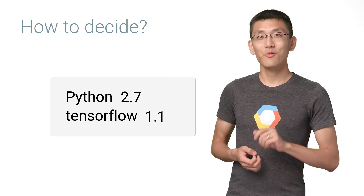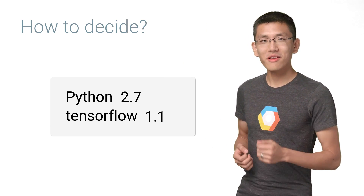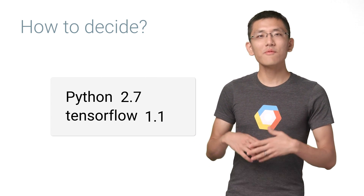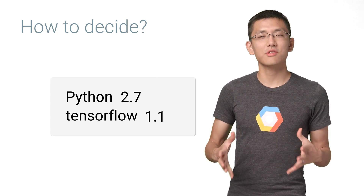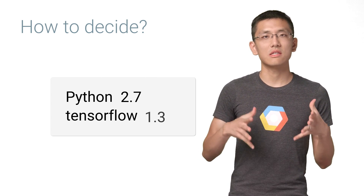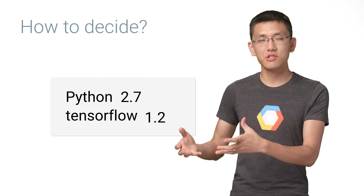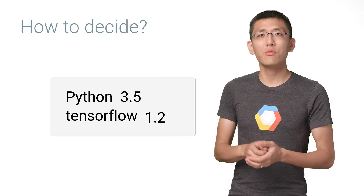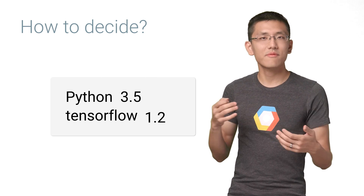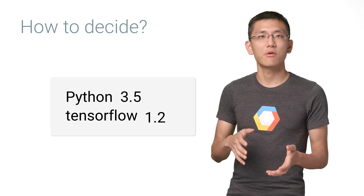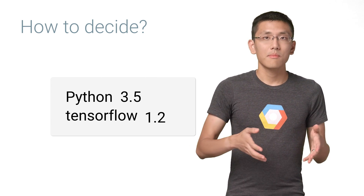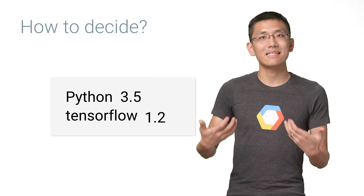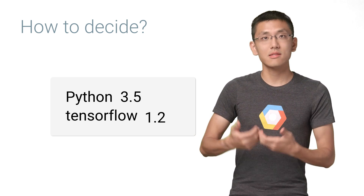So, which one do I use — Virtualenv or Anaconda? I often find myself testing out new versions of TensorFlow and other libraries across both Python 2 and Python 3. So, ideally, I would like to be able to try out different libraries on both Virtualenv and Anaconda, but sometimes those two package managers don't necessarily play nicely with each other on one system.